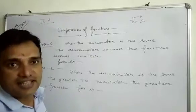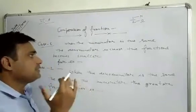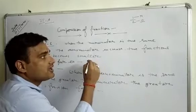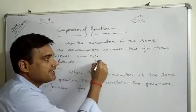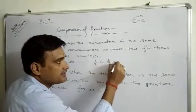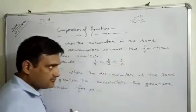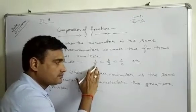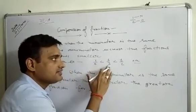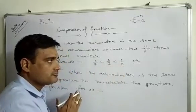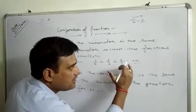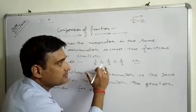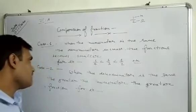Case 1: when the numerator is the same and the denominator increases, the fraction becomes smaller. For example, you can see that 1 by 4 is less than 1 by 3, which is less than 1 by 2. Here, 1 by 4 has a greater denominator than 1 by 3 and 1 by 2. So if the denominator increases, the fraction becomes smaller.